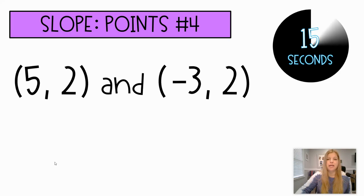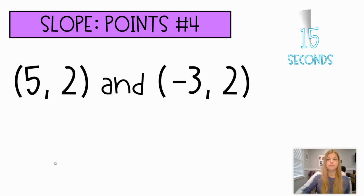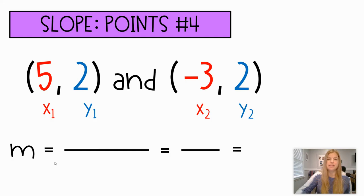5, 2, and negative 3, 2. I think the moment you start to do this one, you're going to know what the slope is right away. And that is because, hopefully, if you notice, if the y's are the same, they're both 2's, and you go to subtract them, you know what 2 minus 2 is, it's 0. And it really doesn't matter what the denominator is, negative 3 minus 5, because you're going to get 0 over negative 8. And 0 divided by anything is just 0.